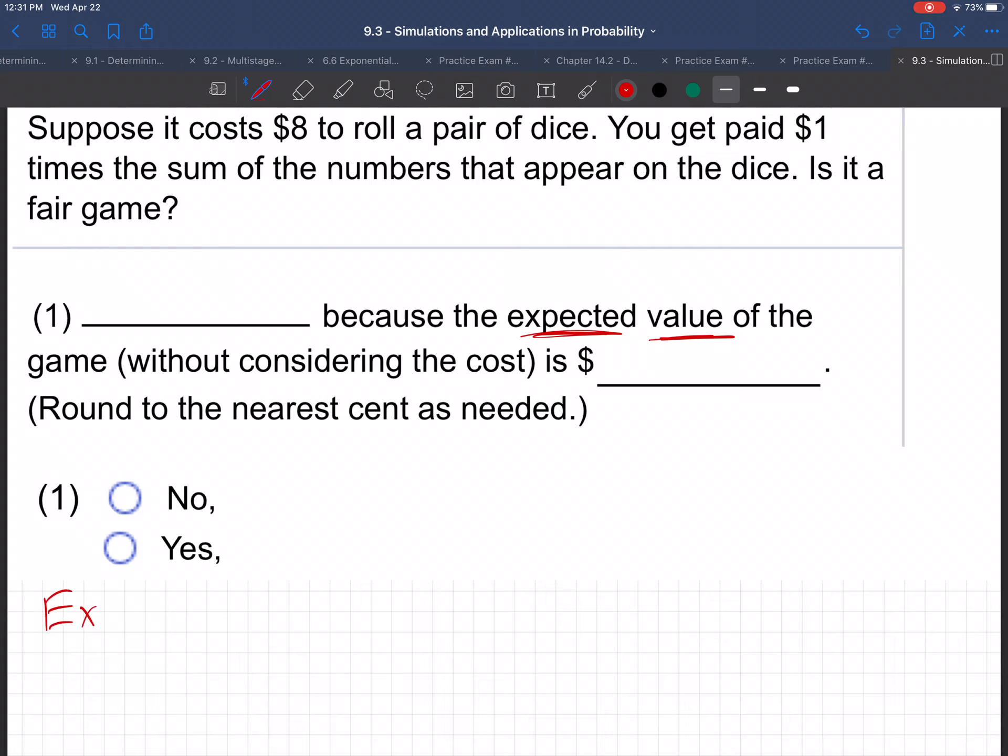So how do we figure out expected value? Remember, you've got to break it into the different outcomes. So you have outcome number one, outcome number two, etc.